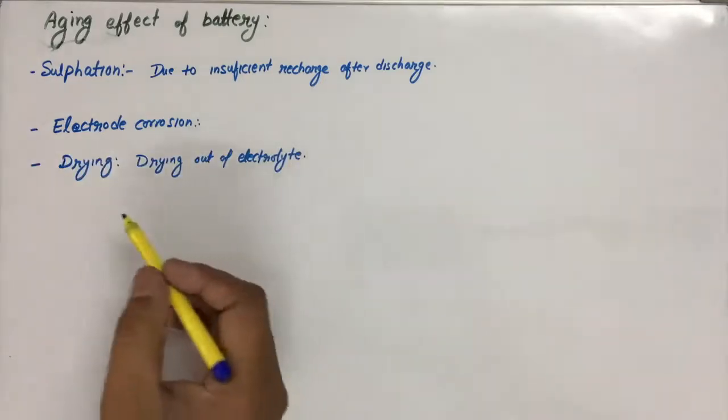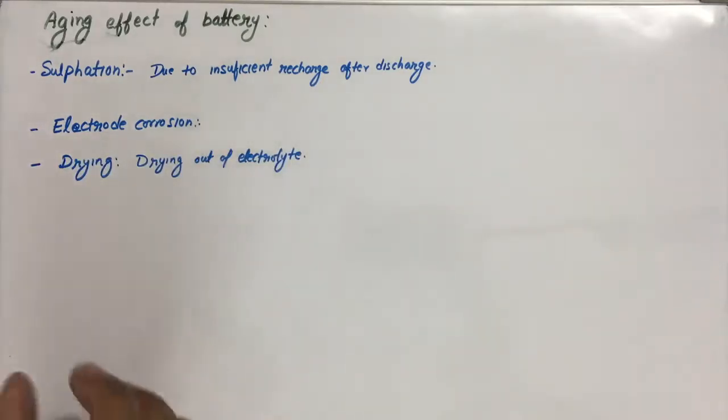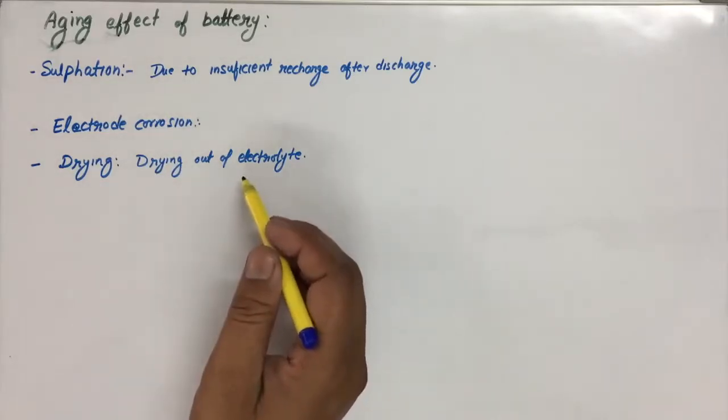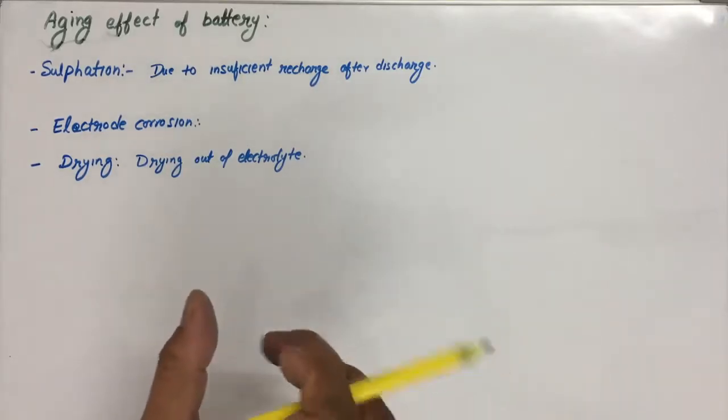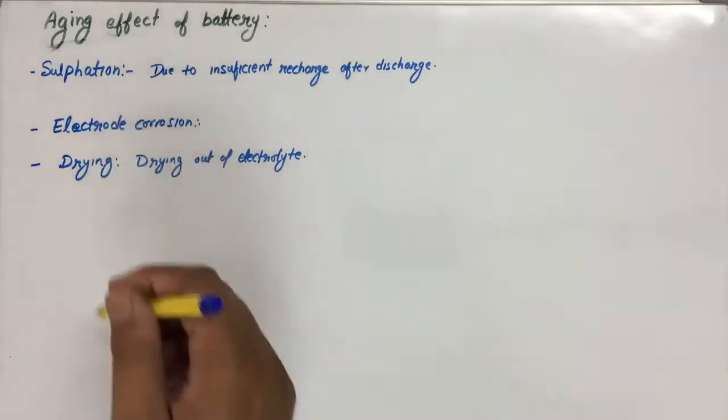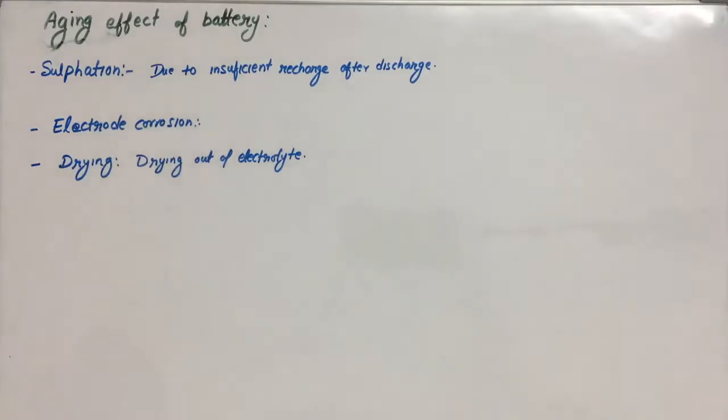And the third one is the battery dryness. That is due to the dry out of the electrolyte. And due to that loss of water takes place. And this should be replaced by timely addition of distilled water. So these are few important causes of the age reduction of the battery.